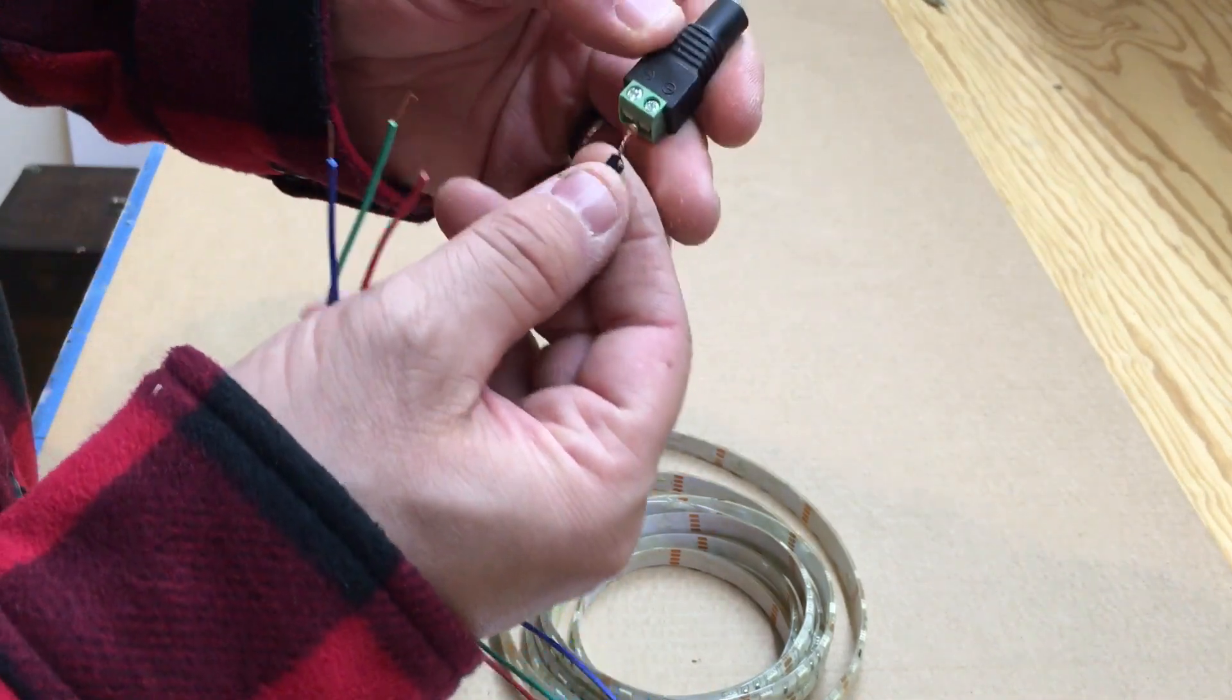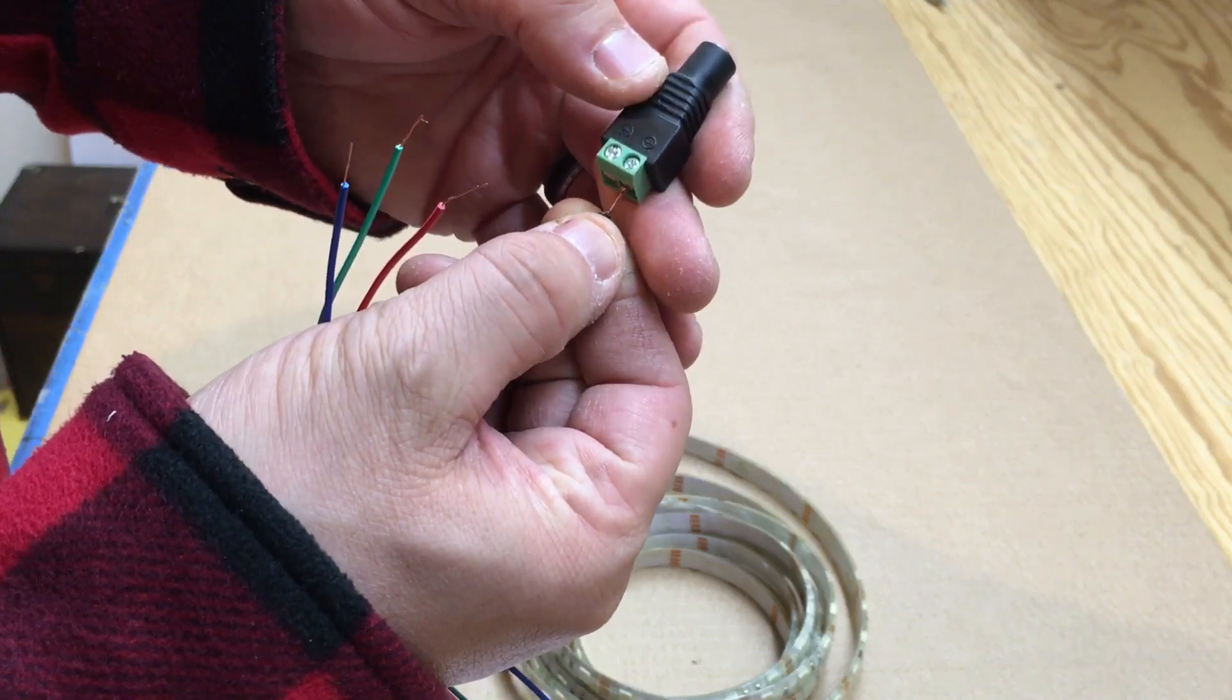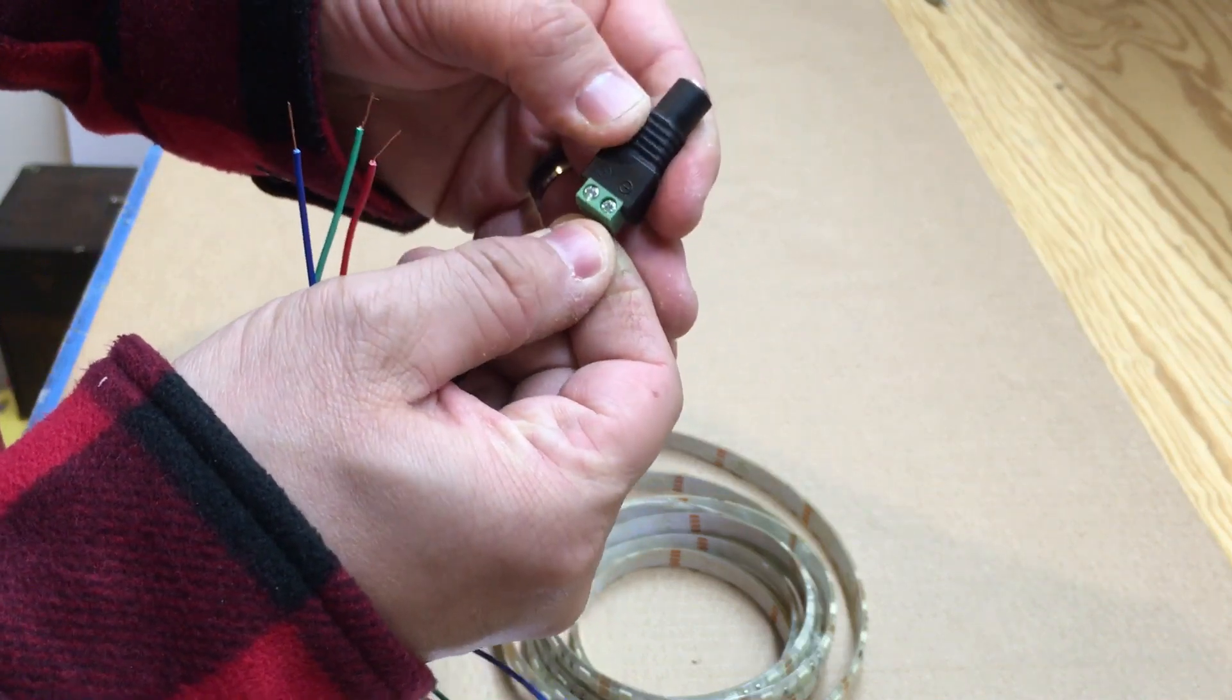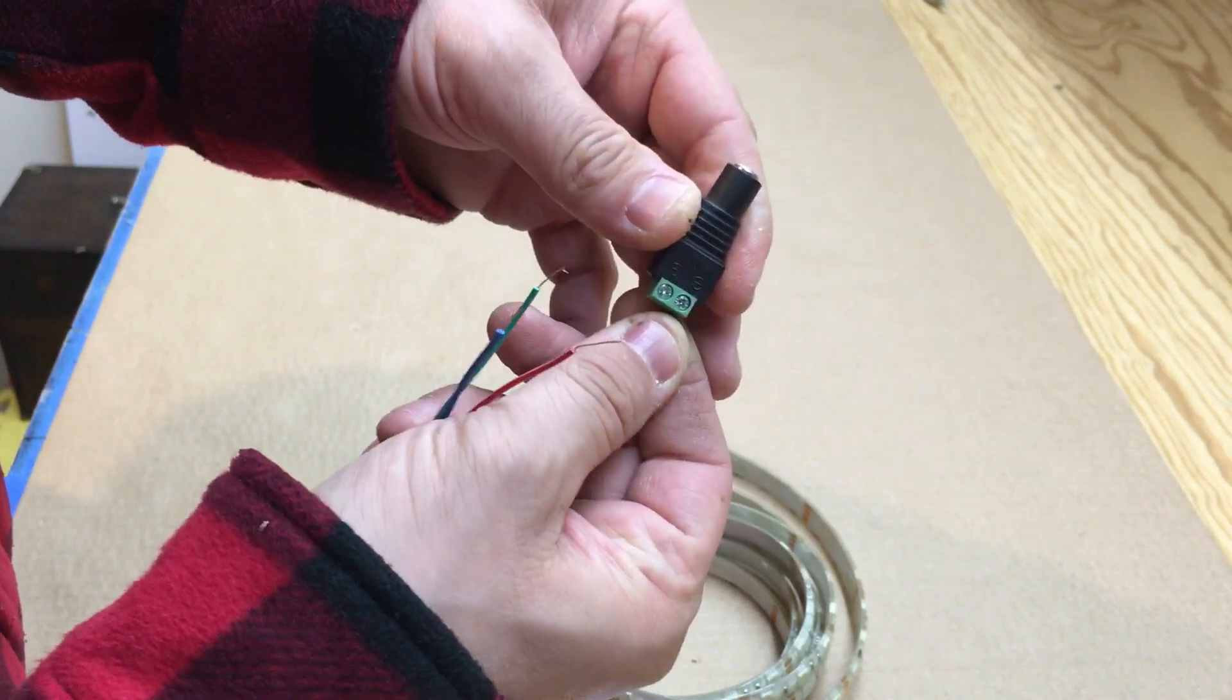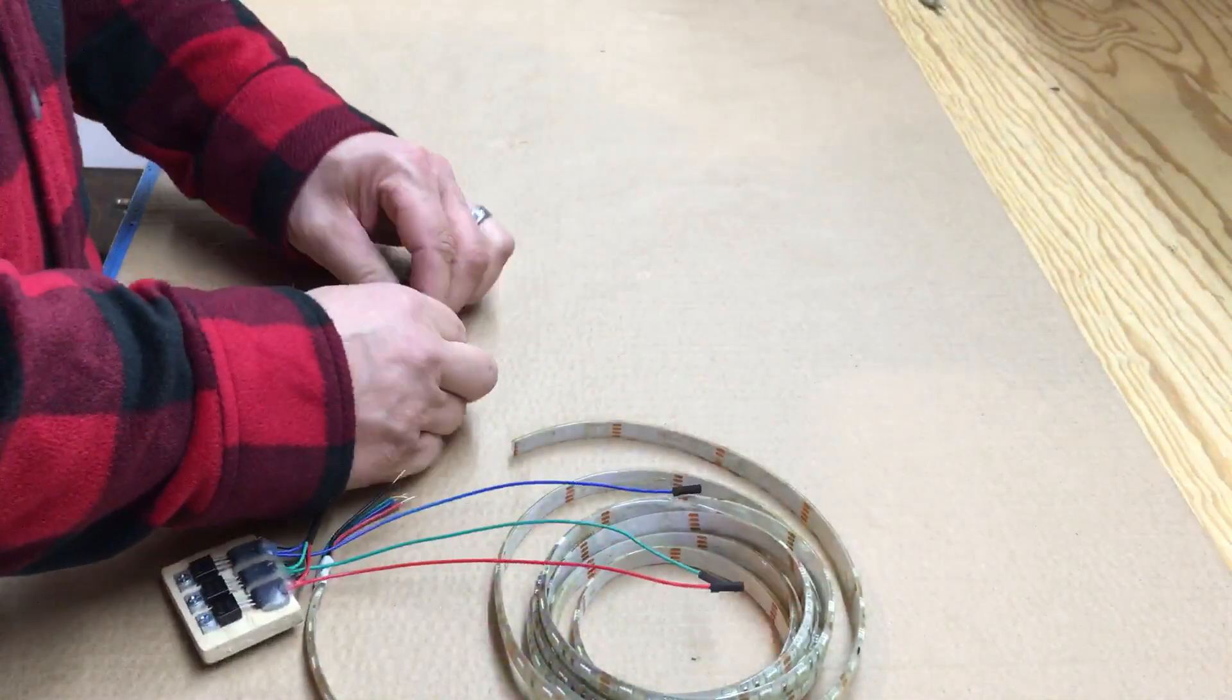So what we're going to do is we're going to take our ground wire and plug it in there. Then we're going to screw that down.